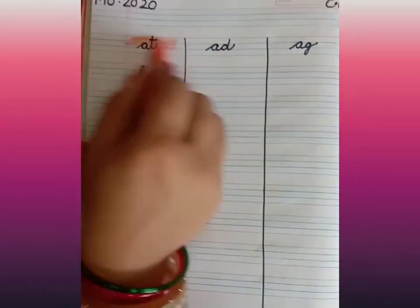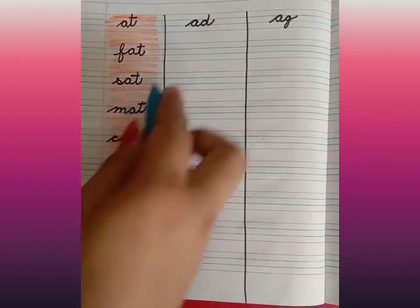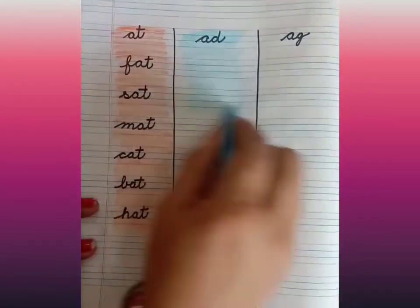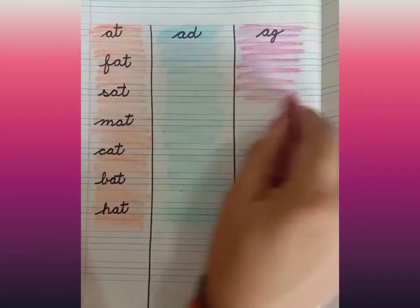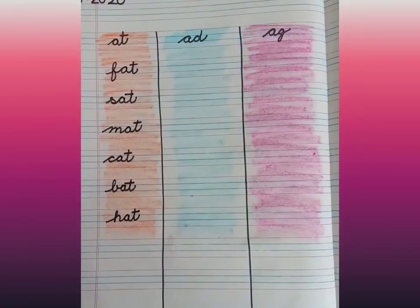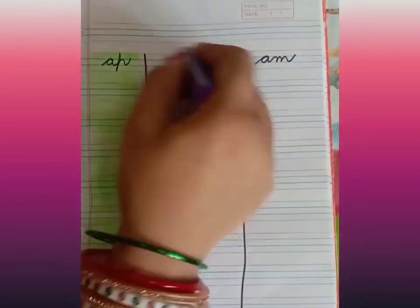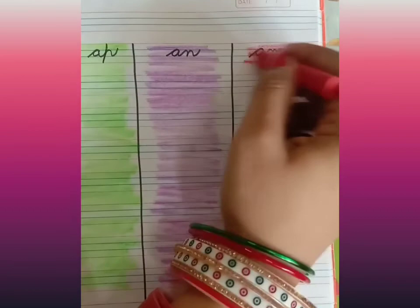Then you have to color: all 'at' words with orange color, all 'ad' words with blue color, all 'ag' words with pink color, 'ap' words with green color, 'an' words with purple color, and 'am' words with red color.